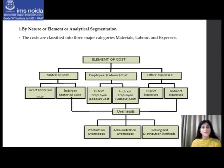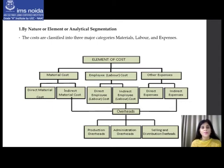Material cost can be classified into direct material cost and indirect material cost. Any material cost which can be directly charged to production is direct material, and anything which cannot be directly allocated to a particular product is indirect material cost. Labor cost is similarly divided into direct labor and indirect labor, and other expenses into direct expenses and indirect expenses.